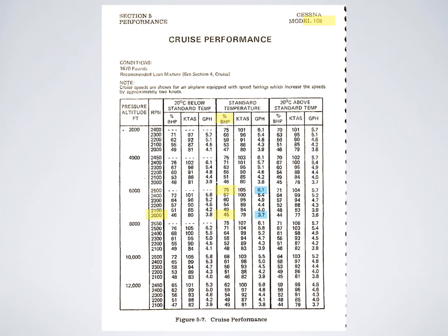From the range profile chart, you find the power setting that will give you the maximum range, which in this case is 45% power. Select that for your en route power setting and that will give you a fuel burn and a true airspeed for that flight.